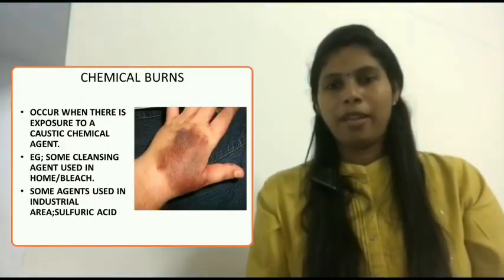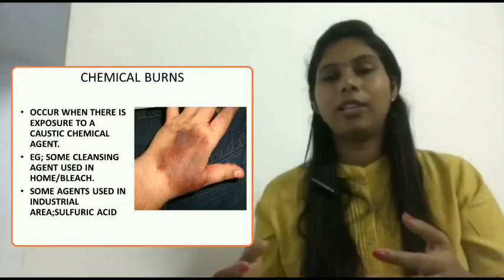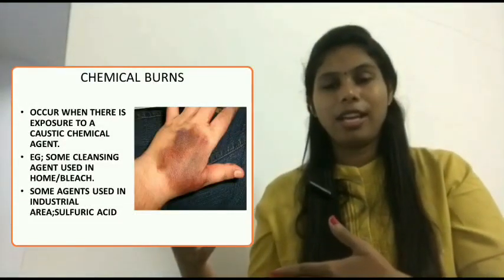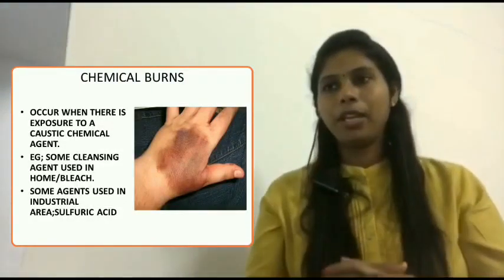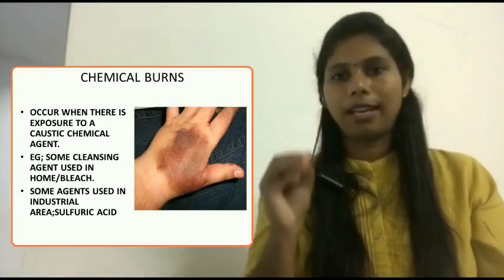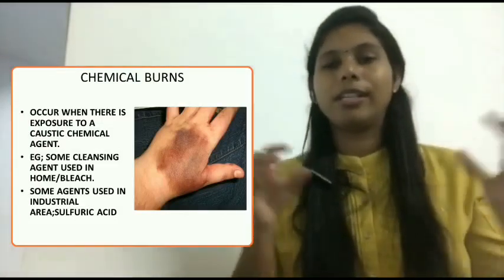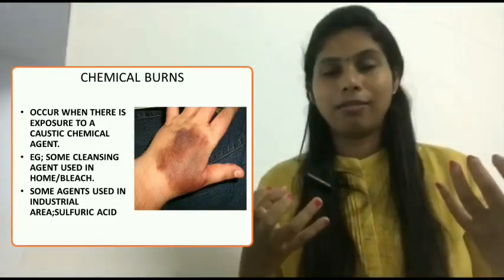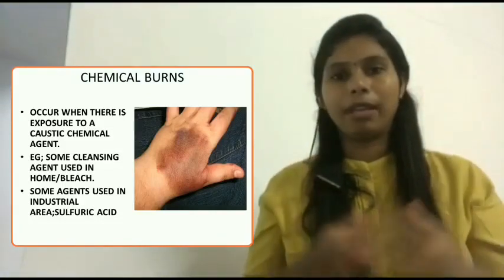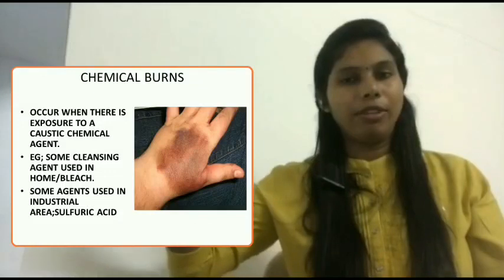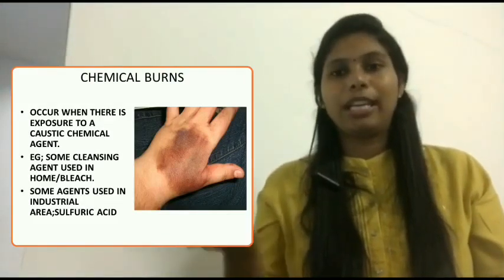The next type is chemical burns. Chemical burns are not as common, but they can sometimes lead to severe allergic reactions, and some symptoms may develop after one day depending on the chemical involved. Chemical burns occur when there is exposure to caustic chemical agents. For example, people working in laboratories or industrial areas may be exposed to sulfuric acid or caustic soda. Even in a home environment, cleaning agents like bleach can cause chemical burns.